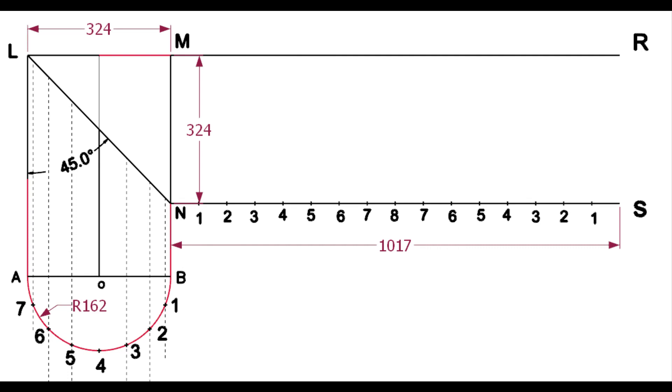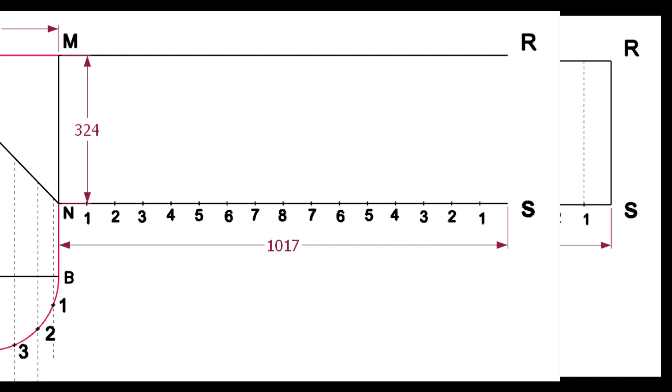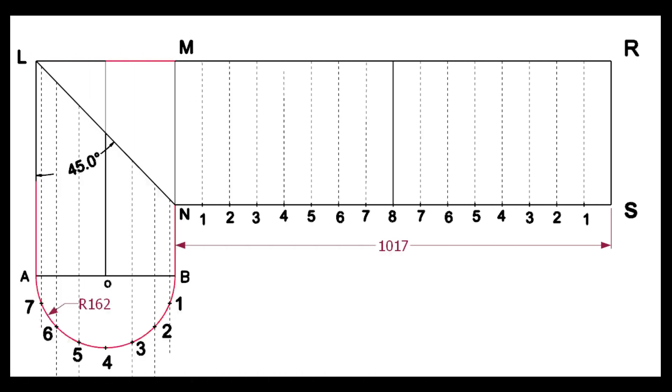Divide the line NS into 16 equal parts. Don't forget to number the lines. Draw vertical lines from 1, 2, 3, etc., touching the line MR.